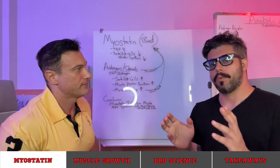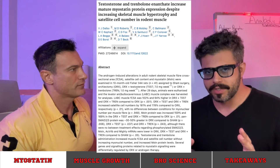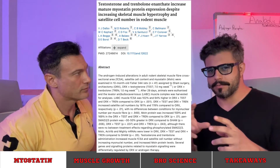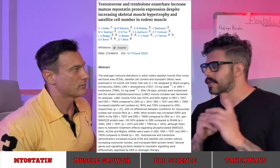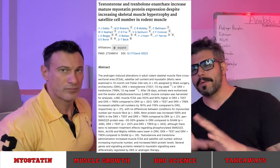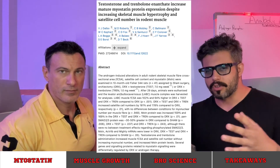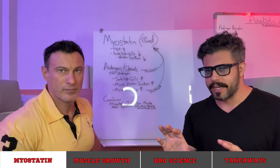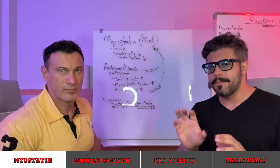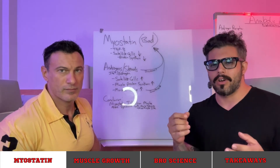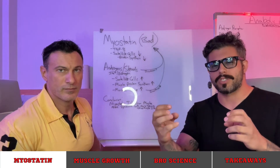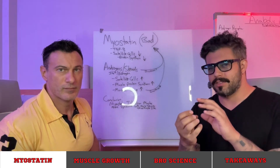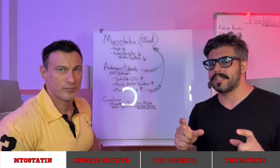This study is informative and can change decision-making. People have been talking about myostatin for a long time as the secret to unlocking muscle gains. What myostatin does is negatively affect muscle growth — it inhibits satellite cell recruitment, what's called myogenesis, the creation of new cells from satellite cells. It also inhibits protein synthesis in those satellite cells.